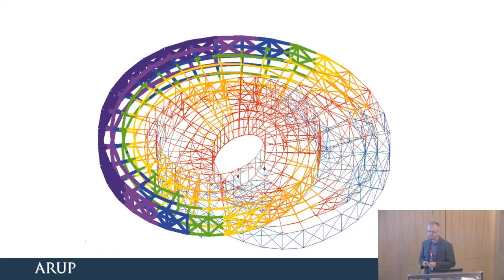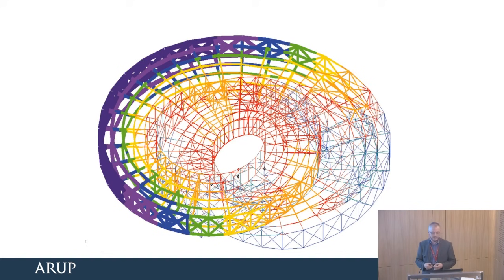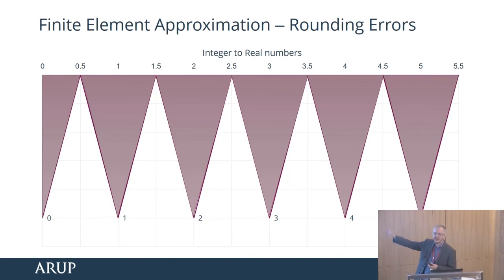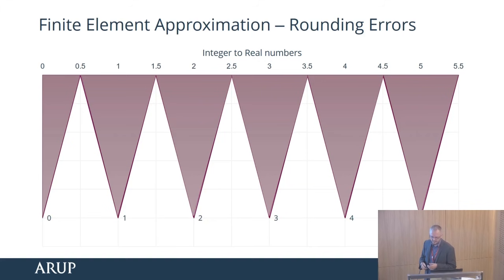Remember that computers are dealing with numbers. The real structure is a physical structure with forces on it, but we are dealing with numbers to represent the forces, the stiffnesses, and so on — which are approximated. Take one example: integers. Each integer approximates to a range of numbers. So 2 approximates to 1.5 to 2.5. This sort of explains the favourite joke of one of my colleagues: 1 plus 1 equals 3 for some large values of 1.